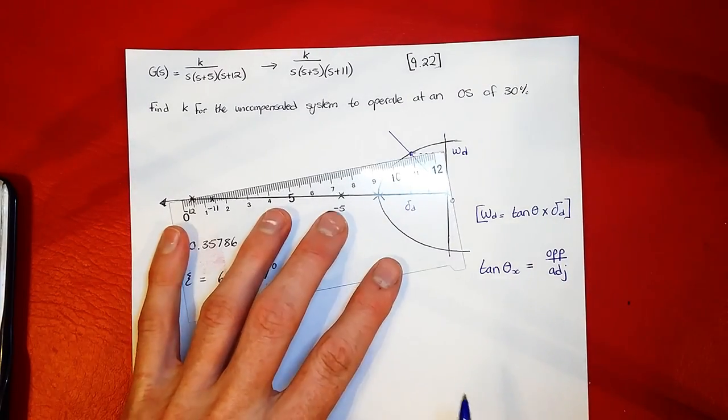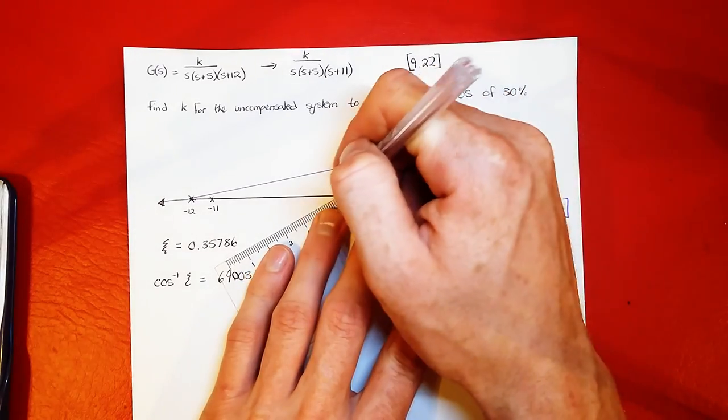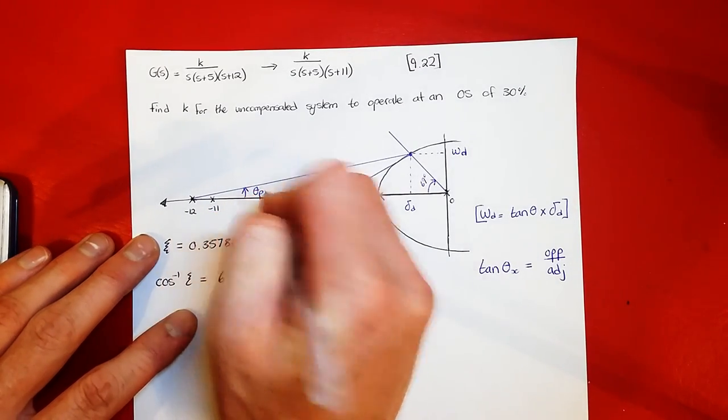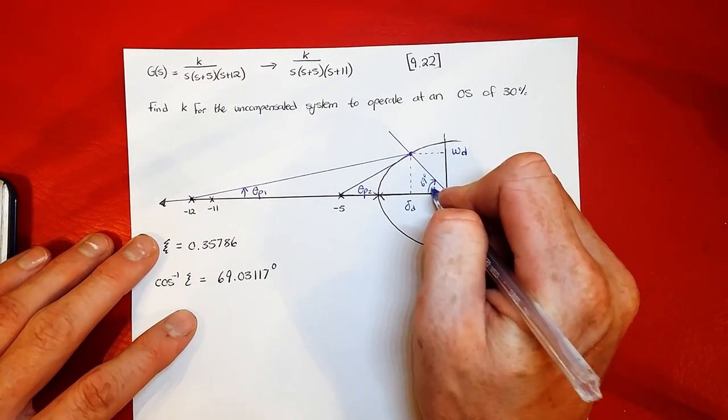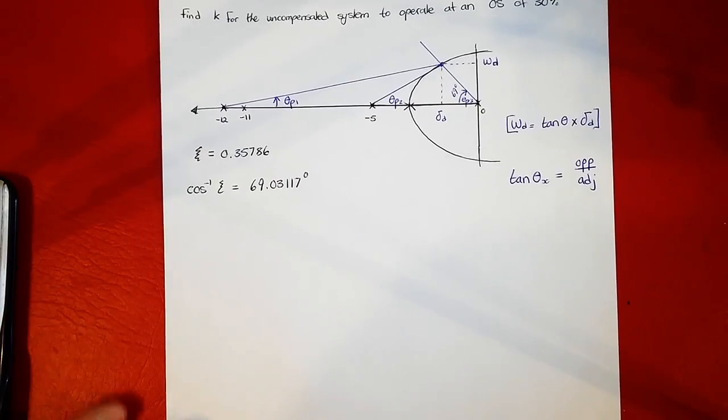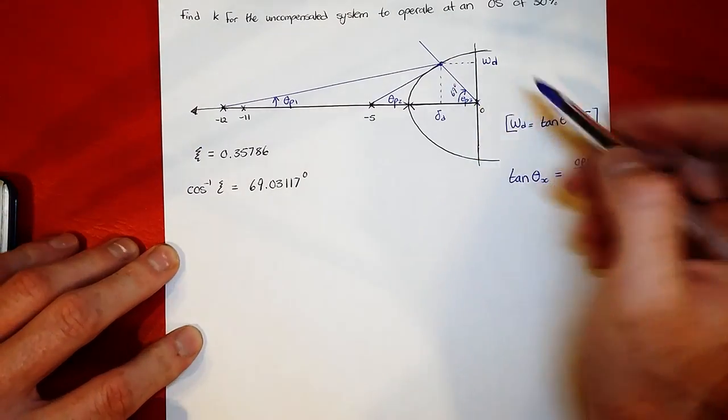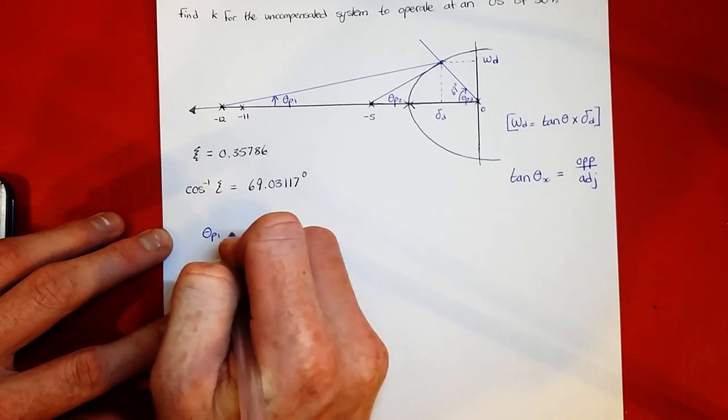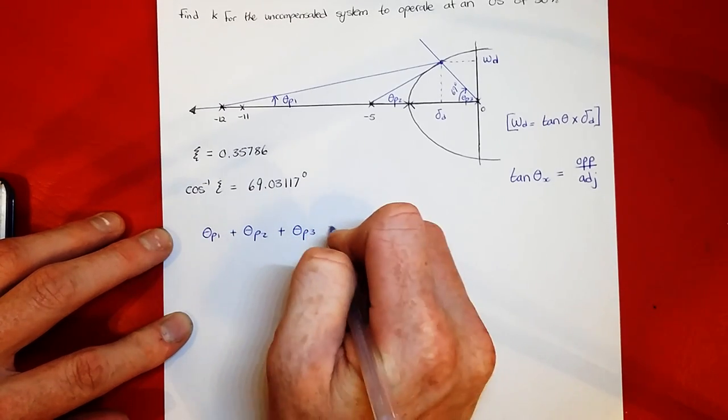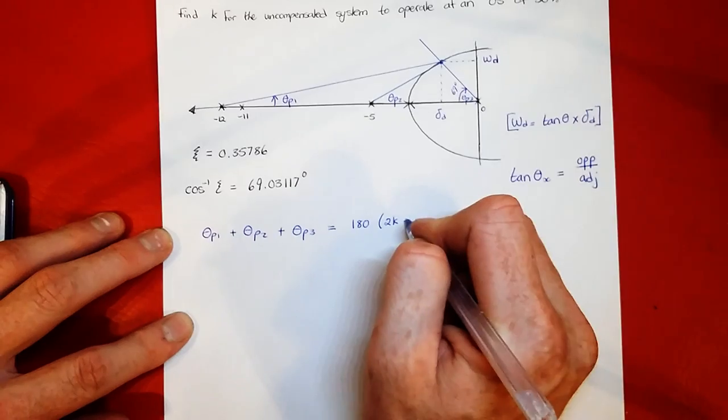Let's first draw in some lines to make it easier to see. We're going to label this one theta p1, theta p2, and theta p3. We know that to find that point, because it's on the root locus, it has satisfied the angle criteria. So theta p1 plus theta p2 plus theta p3 must equal 180 degrees times 2k plus 1.